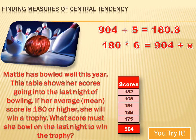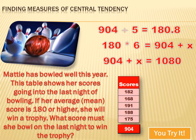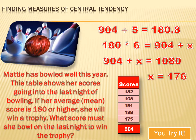Putting it back into the problem: 6 times 180 equals her current total, 904, plus whatever she gets tonight, which we'll call x. Simplifying: 904 plus x equals 1,080. Subtracting 904 from both sides to isolate x gives x equals 176. So Maddie only has to bowl 176 or better tonight and she'll win a trophy.